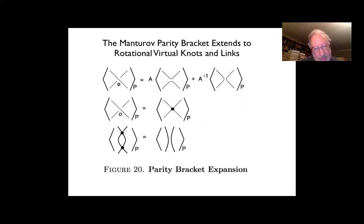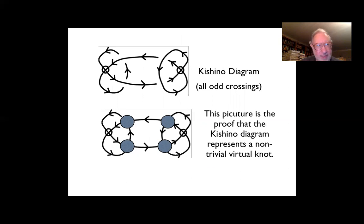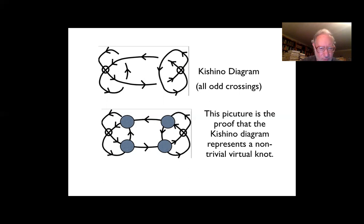You search the graphs for possible Reidemeister two moves and undo them until you get a reduced graphical diagram. Irreducible graphical diagrams become part of the invariant. Here's a simple example: the Kishino diagram has all odd crossings, and it has trivial bracket polynomial — many invariants cannot see it. The parity bracket handles it at once: notify all crossings, examine the resulting graph, find no two-move reductions, and the diagram itself is its own invariant.